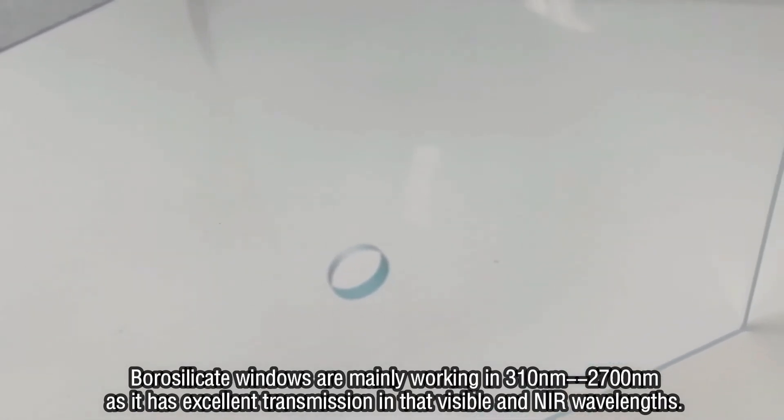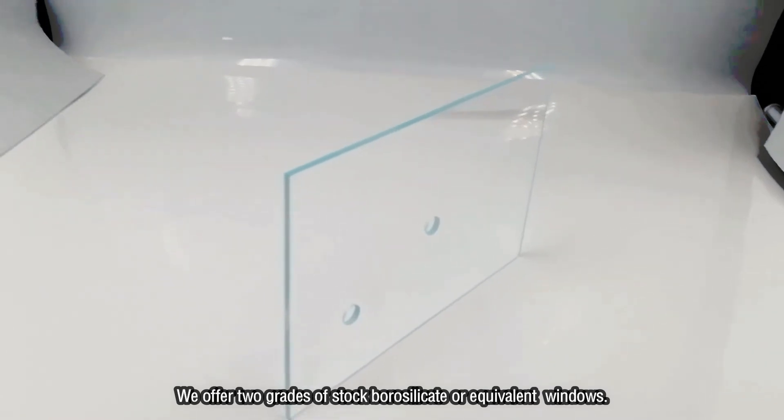Borosilicate windows are mainly working in 310nm-2700nm, as they have excellent transmission in the visible and NIR wavelengths. We offer two grades of stock borosilicate or equivalent windows.